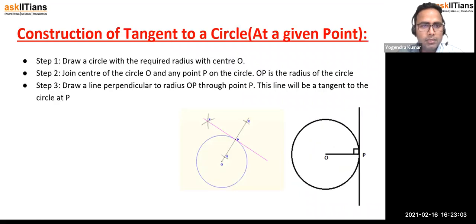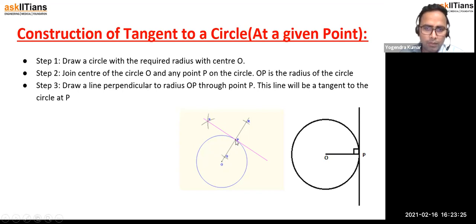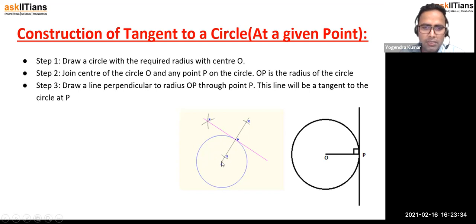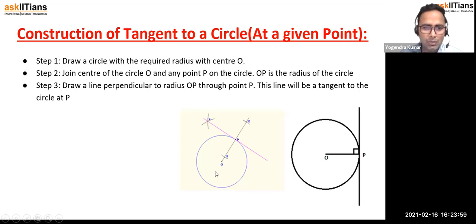Let's get started with construction of a tangent to a circle at a given point on the circle. We have a circle of some given radius. We will draw the circle, then join the given point to the center. If the circle is given, its center is known. If the center is not given, we know the method to find the center of the circle - we did that in ninth grade.